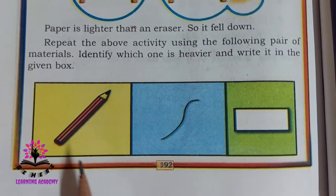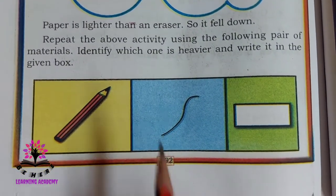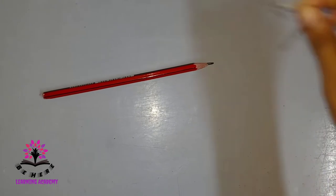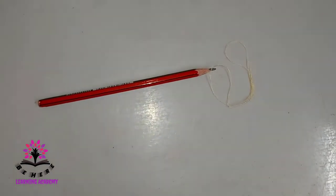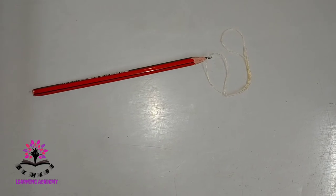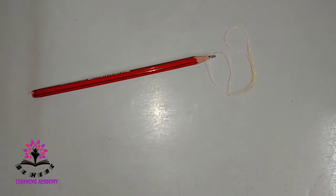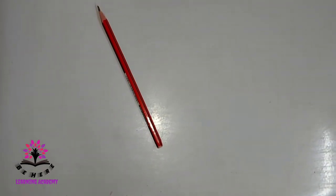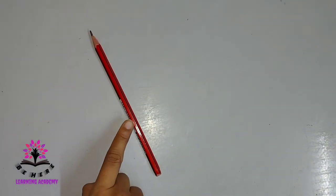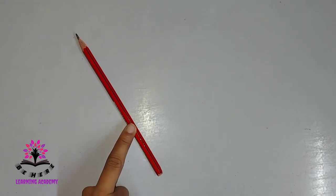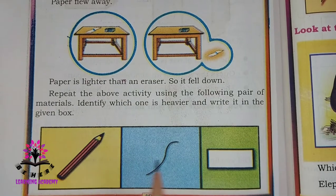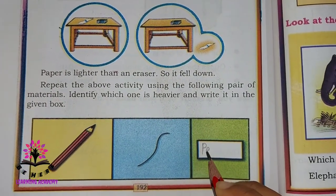Repeat this activity using the following pairs of materials and identify which one is heavier. First pair: a pencil and a piece of thread. Keep a pencil and a piece of thread on the table, then gently blow across the objects. What did you observe? The pencil remained — that means the pencil is heavier than the thread.